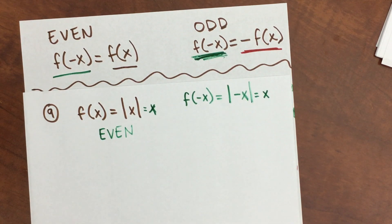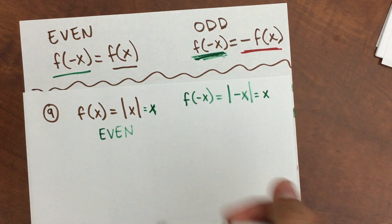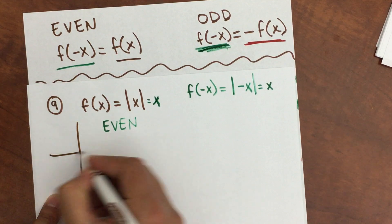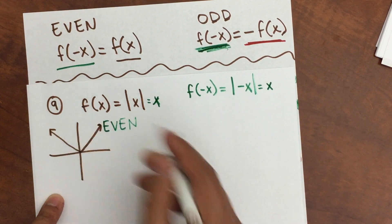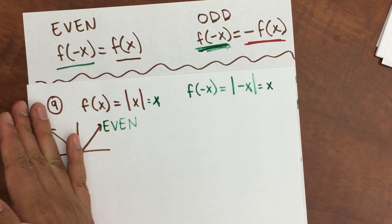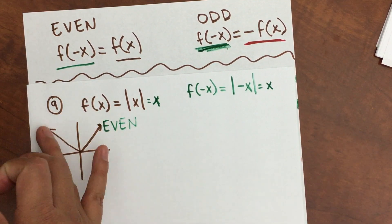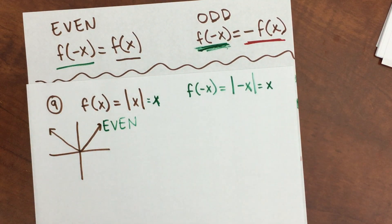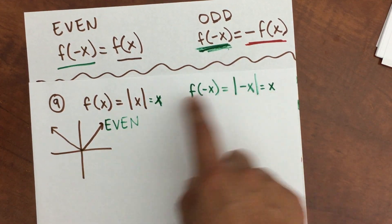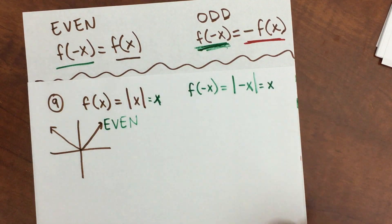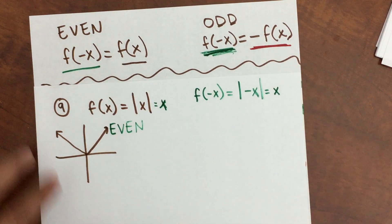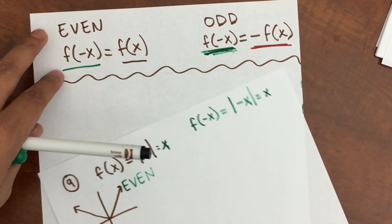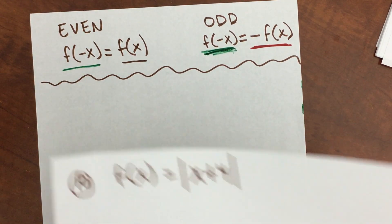So I'm going to sketch the graph. When it has even symmetry, it means that if you fold it, this part will match the part on the left — and it does. If it was not the same, then you would have to try odd by checking the negative f of x. So let's do another one.